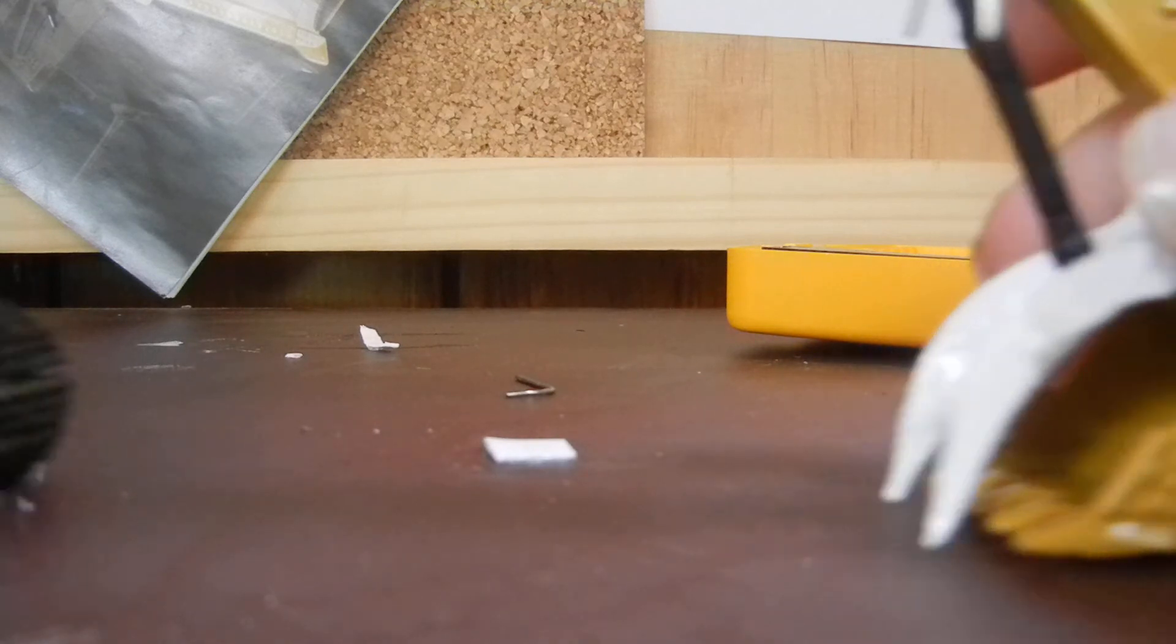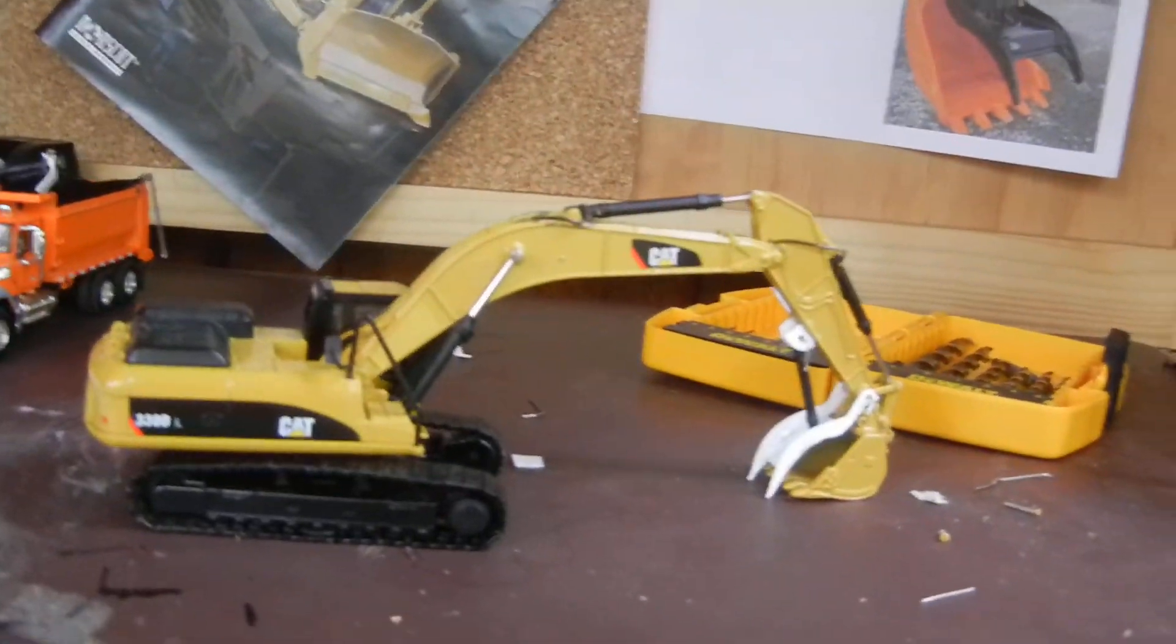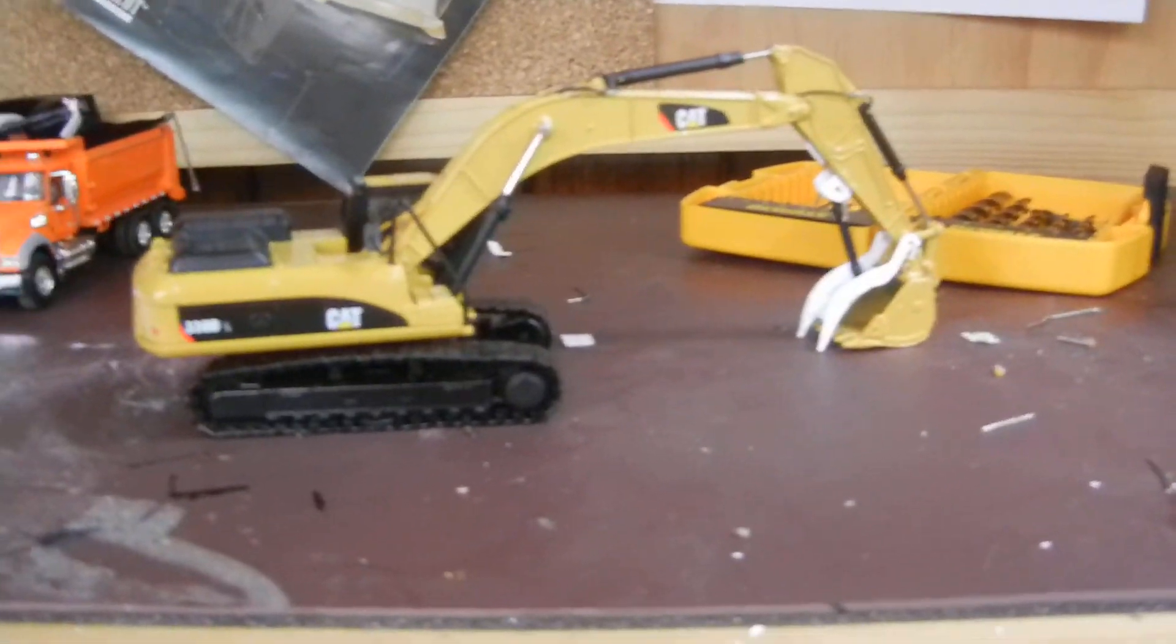Now, with no cylinder and no bucket, it looks like you could put a grapple on it. But the machine itself isn't in the best of conditions. Anyway. So yeah, that's my functioning thumb for my 330. Tell me what you guys think. And thanks for watching.